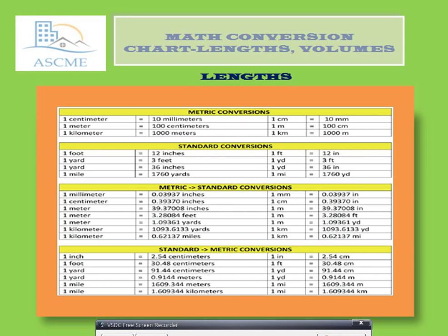For example, one centimeter is equal to 10 millimeters. In the extender section, one foot is equal to 12 inches. This is the full form on one side and the short form on the other side in the metric chart.